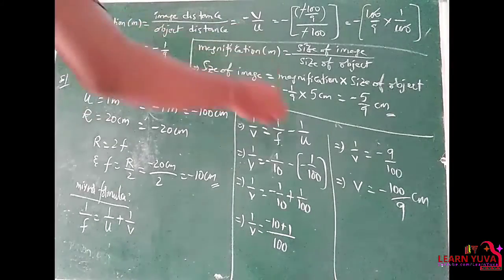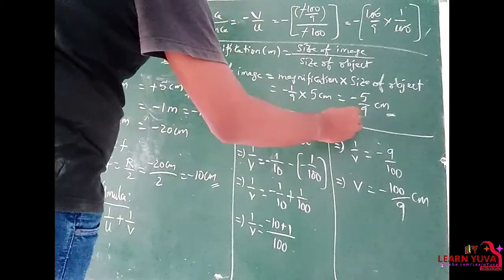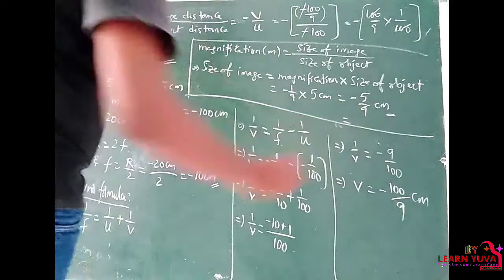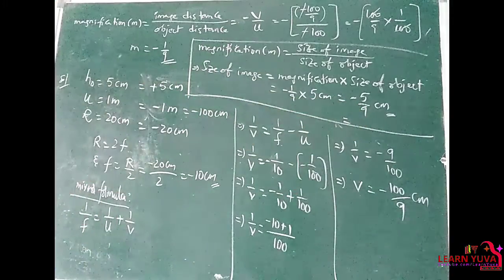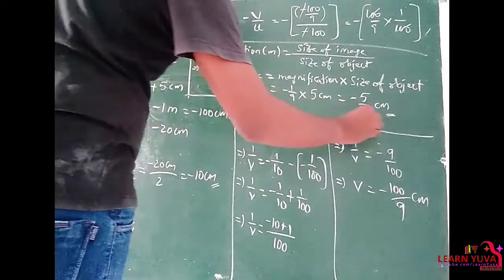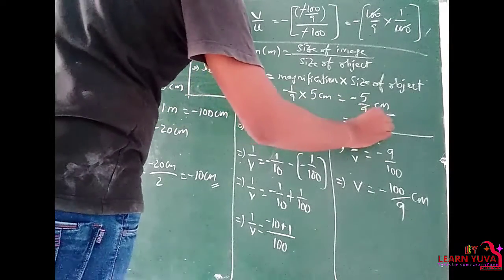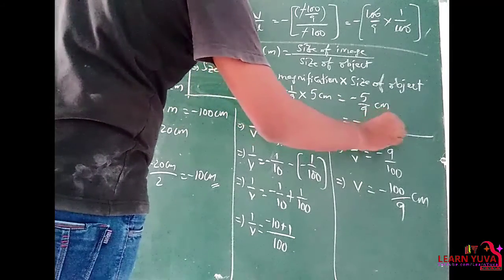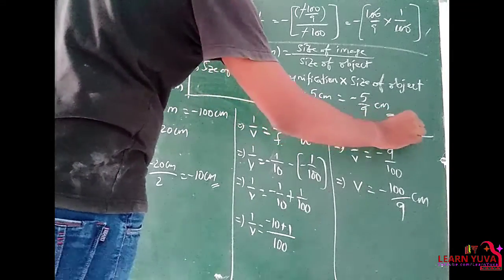We can convert it into decimal form. 5 by 9 is approximately 0.55 cm.